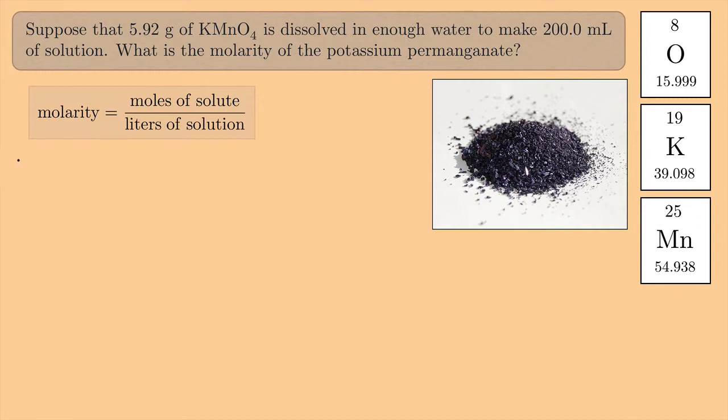So if I were to do the molar mass of KMnO4, then I would need, let's see, I have one potassium here. So potassium is 39.098 grams per mole. And then I have one manganese, and that's 54.938 grams per mole. And I have four oxygens. So that's four times 15.999 grams per mole. And if you calculate all this for the molar mass, you should get 158.032 grams per mole.